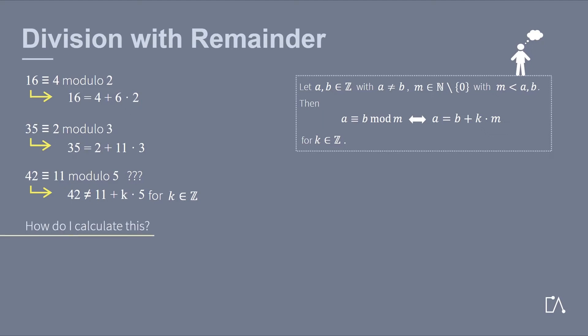Because there is no integer k such that 42 equals 11 plus a multiple of 5. But how do I calculate this? And in particular with larger numbers? Let's look again at example 2. We have to find out what 35 is equal to modulo 3. For this, we divide 35 by 3, which gives us 11 with a remainder of 2.